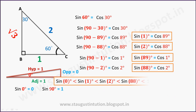We can now order the values: sin 0°, sin 1°, sin 2°, sin 3°, … up to sin 90°. Going further: sin 90° = sin 89° is larger than sin 88°. This ordering is what we will use.